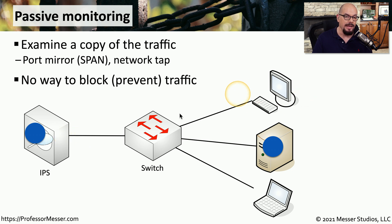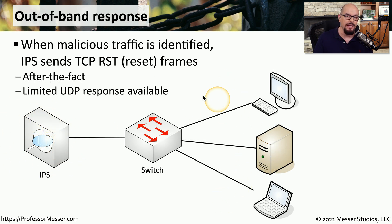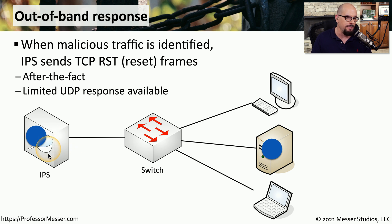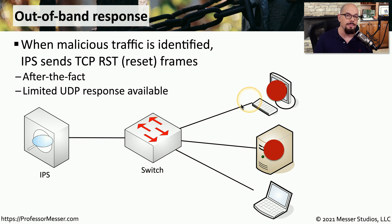Since this IPS is not in line with the actual traffic flows, there's no way for it to block traffic in real time. However, there are some response methods that allow the IPS to limit traffic through an out-of-band response. If the IPS identifies malicious traffic within those flows, it can send a TCP reset frame to the devices, effectively disabling that particular traffic flow. This doesn't stop the original packet from getting through, but it would prevent any subsequent information being sent over that same flow. If the traffic flow was UDP-based, the IPS would not have a reset feature available to disconnect that particular flow.